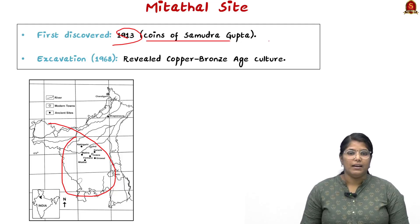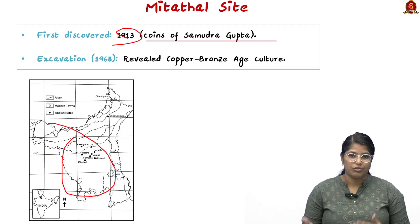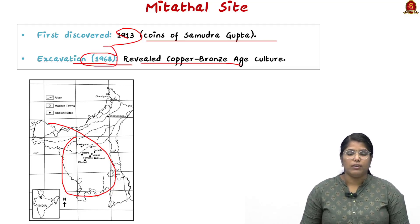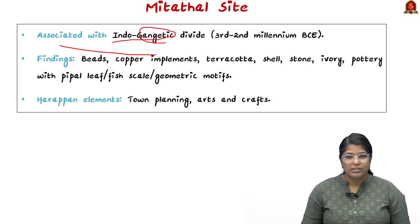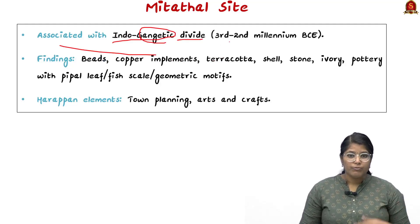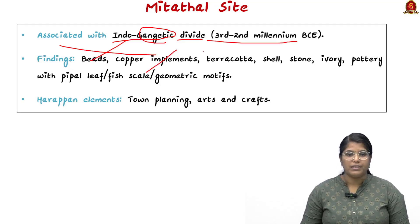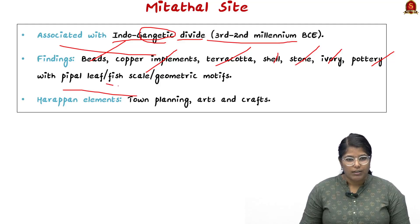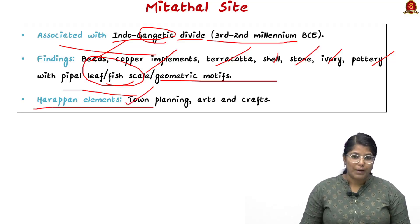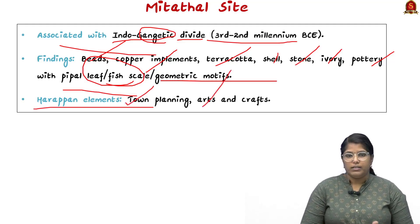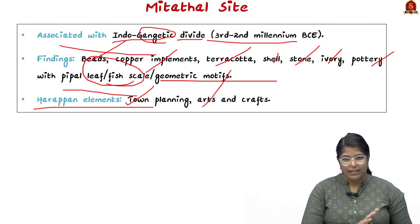At Mitatel, coins of Samudragupta were also found. Excavations in 1968 revealed a copper-bronze age culture associated with the Indo-Gangetic divide, dating back to the third and second millennium BCE. Findings include beads, copper implements, terracotta, shell, stone, ivory, pottery with fish-scale and geometric motifs, Harappan-style town planning, and various art and artifacts.